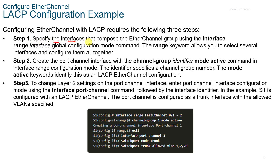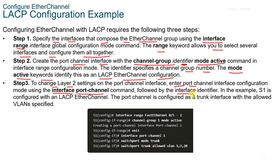There are three steps to configuring LACP. Step 1: Specify the interfaces that compose the EtherChannel group using the interface range command. The range keyword allows you to select several interfaces and configure them all together. Step 2: Create the Port Channel Interface with the channel-group identifier mode active command. The identifier specifies a channel group number. The mode active keywords identify this as an LACP EtherChannel configuration. Step 3: Change the Layer 2 settings on the Port Channel Interface by entering Port Channel Interface configuration using the interface port-channel command followed by the interface identifier. In the example, S1 is configured with an LACP EtherChannel and the Port Channel is configured as a trunk interface with the allowed VLANs specified.